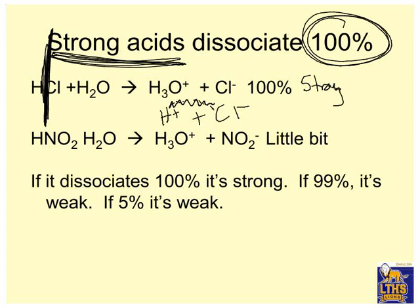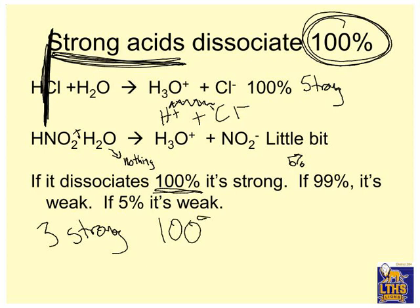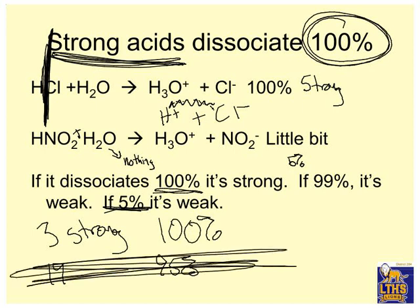HNO₂ is a weak acid. So HNO₂ plus H₂O gives you H₃O⁺ and NO₂⁻ — a little bit. Mostly what happens is nothing. This happens like 5% of the time. If it dissociates 100%, it's strong. If it's 99%, it's weak. If it's 5%, it's weak. So if I tell you that there are three strong chemistry students in my class — that means three people have 100%. Everybody else is weak. I could have another 19 chemistry students that have 95%, but they're all considered weak because they're not 100%.